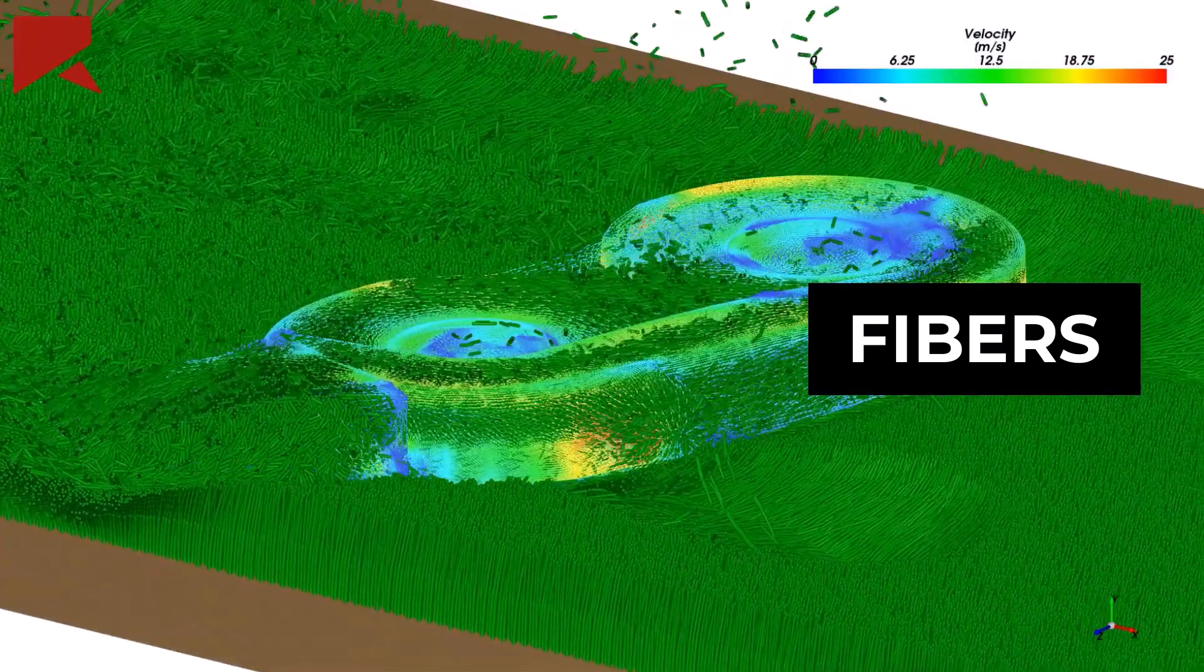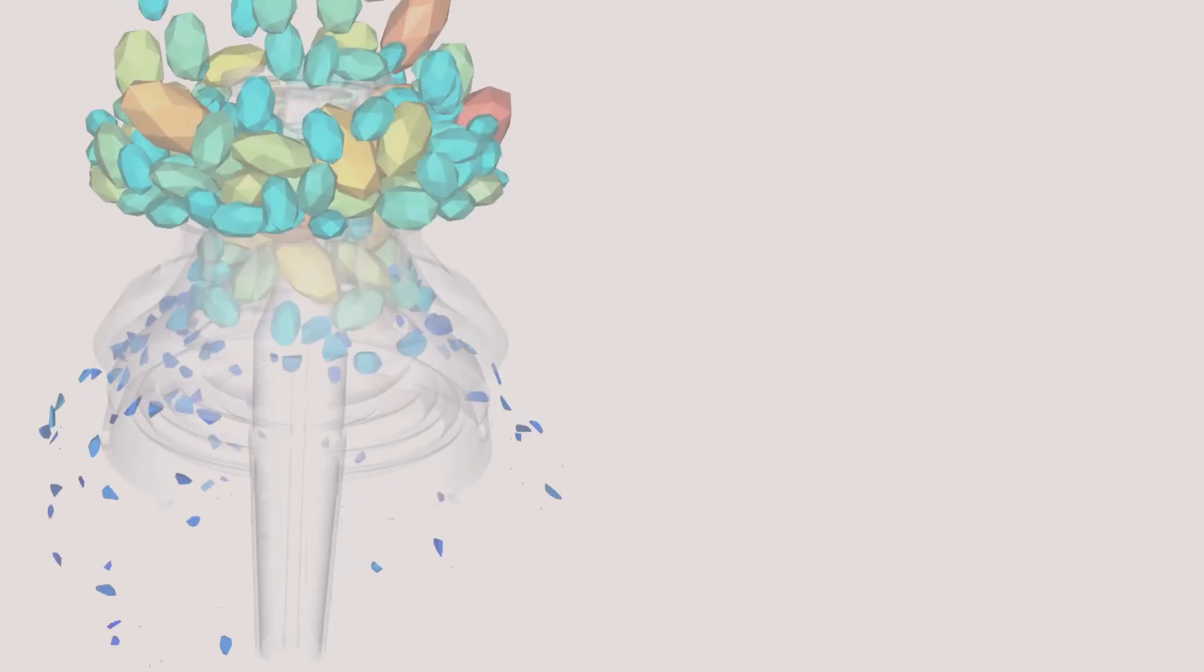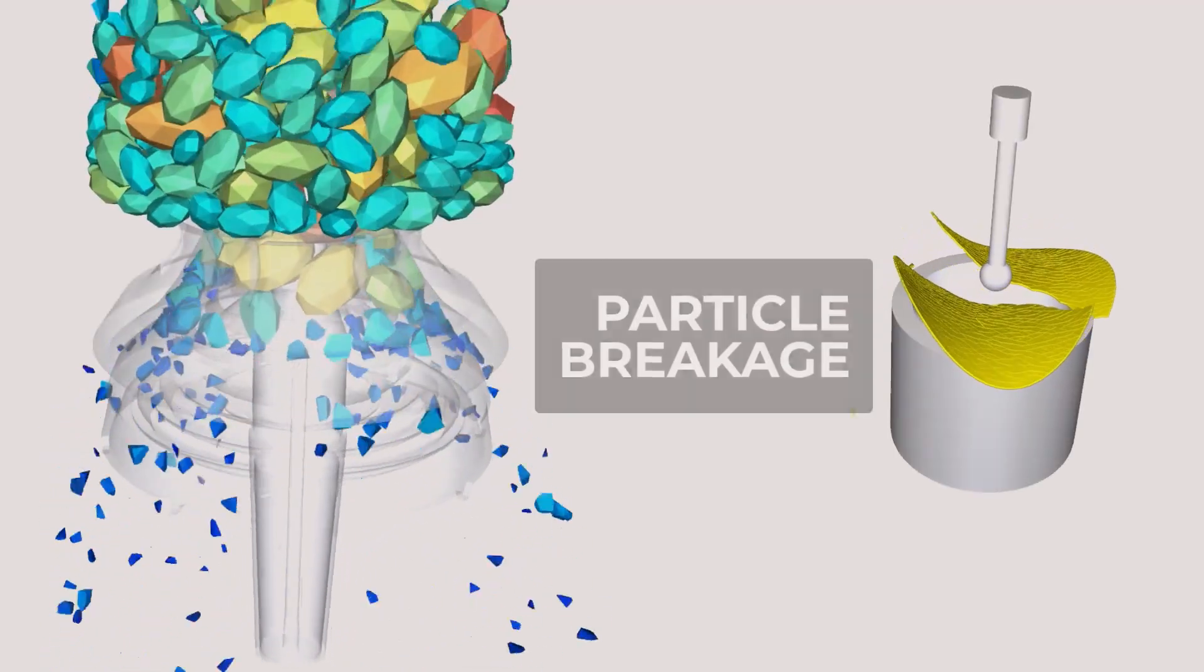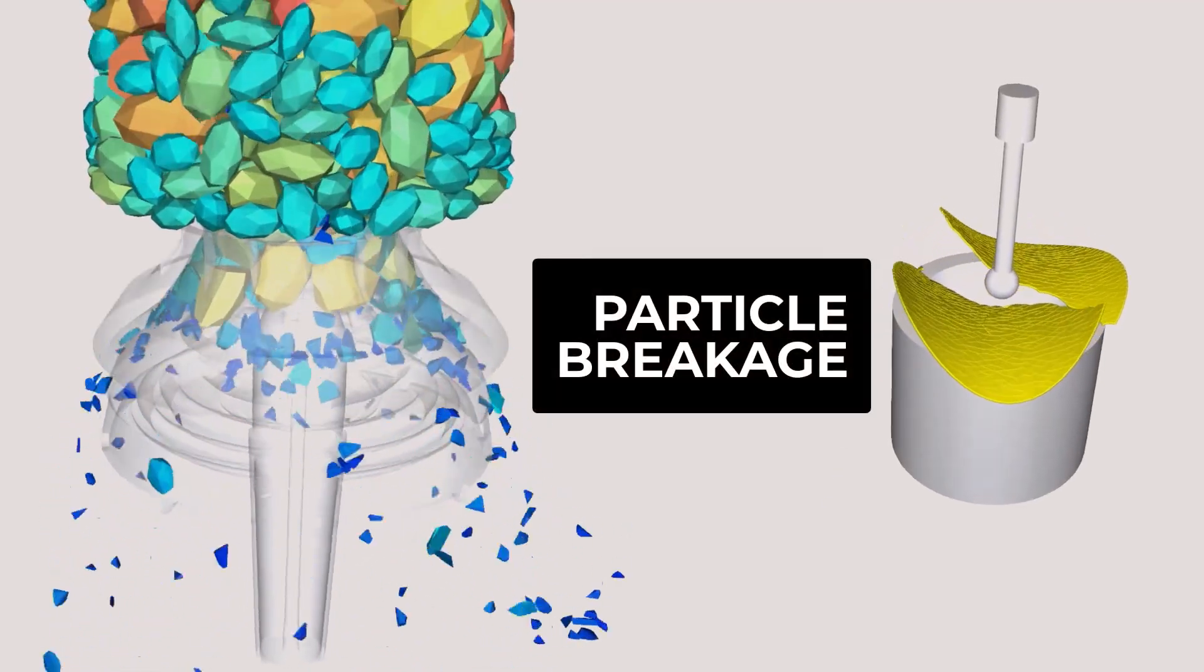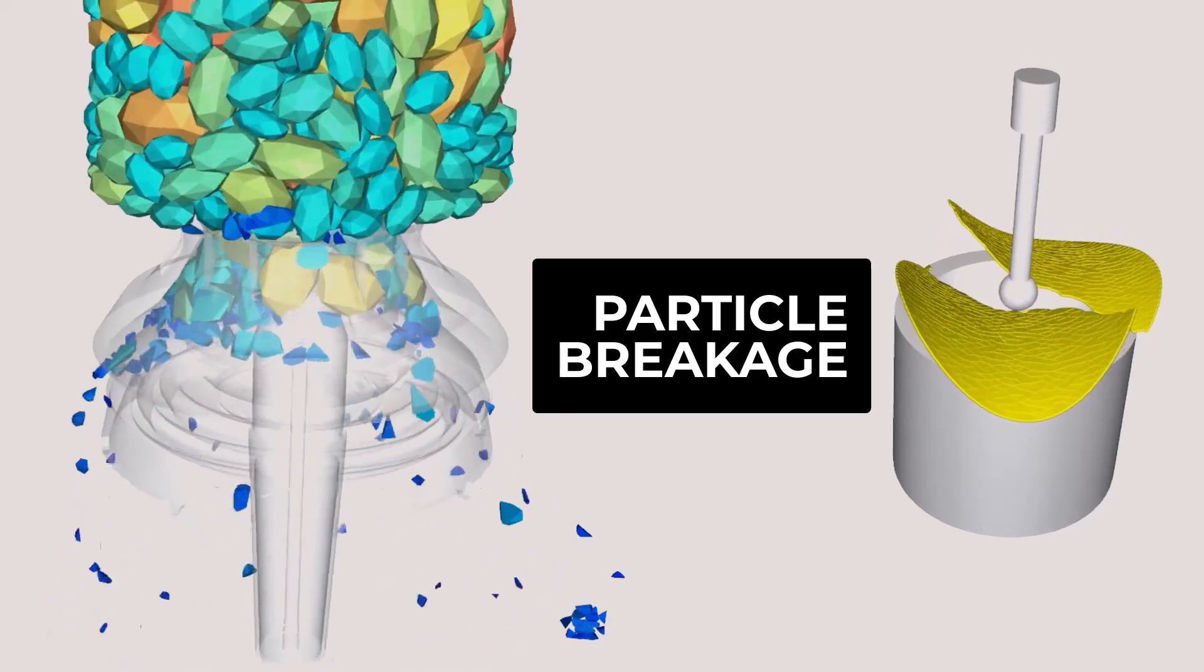Flexible or rigid and breakable. ANSYS Rocky can simulate breakage for particles of any shape and aspect ratio, capturing shape-dependent breakage and crack propagation.